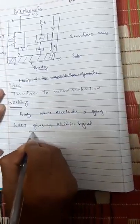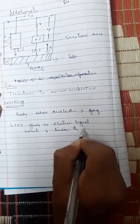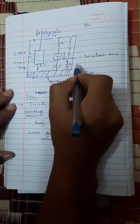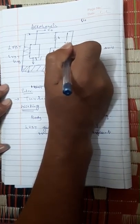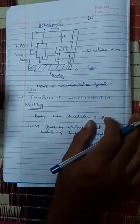The LVDT gives us an electric signal which is linear to the displacement. This accelerometer measures acceleration. Now let us move to the mathematical equations. This is the simple concept of how the accelerometer works.